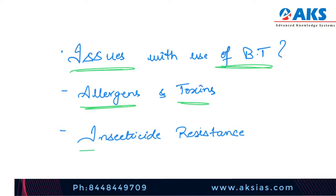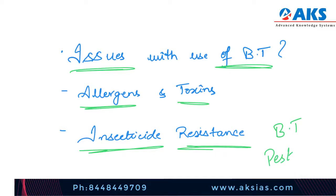Number two is insecticide resistance. There have been fears that large-scale adoption of BT crops — that is Bacillus thuringiensis crops — will result in rapid build-up of resistance in pest populations. Insects possess a remarkable capacity to adapt to selective pressures, so excessive use of BT will lead to insecticide resistance and could lead to large-scale damage to crops by insects in the future.